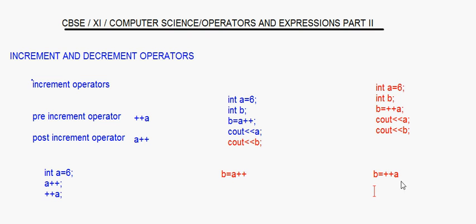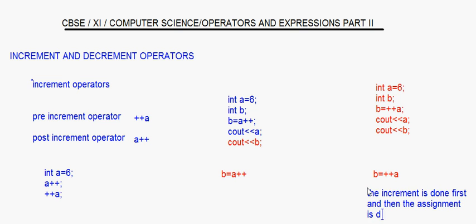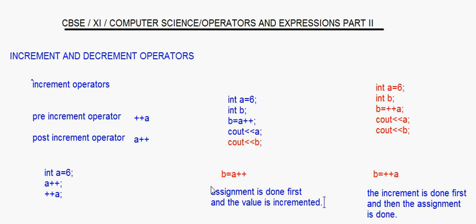If you have a pre-increment operator, the increment is done first, and then the assignment is done. In the case of post-increment, the assignment is done first, and then the value is incremented.